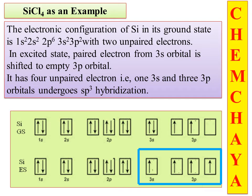This is the ground state of silicon. Before undergoing hybridization, we consider the excited state. The silicon in the excited state has the same 1s2, 2s2, 2p6 core, and the valence configuration is 3s2, 3p2.